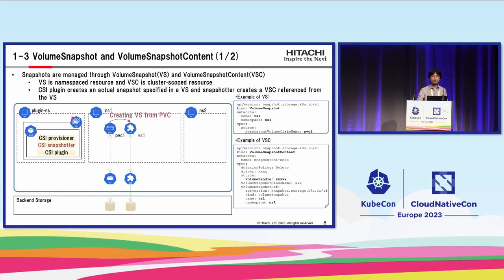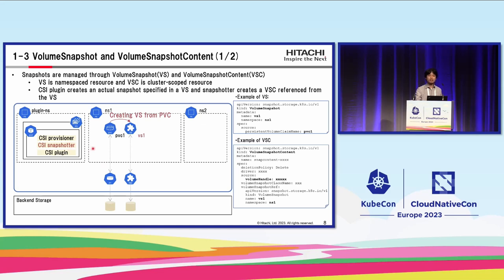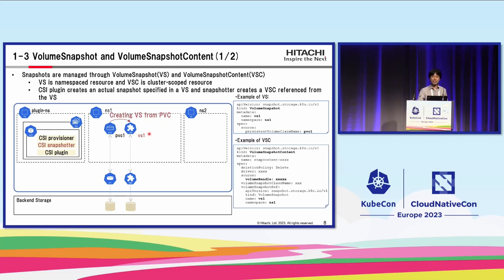The next feature is volume snapshot. Kubernetes has a feature to take a snapshot of a volume. Similar to volumes, snapshots are managed through VolumeSnapshot (VS) and VolumeSnapshotContent (VSC). VS is a namespaced resource that users create, and VSC is a cluster-scoped resource that the snapshotter creates and manages. A user creates a VS specifying which PVC to take a snapshot from, then a corresponding VSC is created. Because VSs are namespaced resources and users access the snapshot through VS, a certain snapshot can't be accessed from other namespaces.